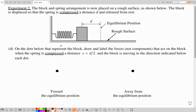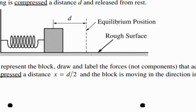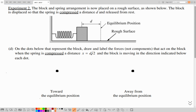Moving on to the next page: in experiment 2, the block and spring arrangement is now placed on a rough surface. The block is displaced so that the spring is compressed at a distance d and released from rest. Now that the surface is rough, we have added friction between the block and surface. We won't have simple harmonic motion anymore. Two things happen: the amplitude will decrease over time, while the period, though slightly longer, is assumed to change negligibly compared to the change in amplitude.